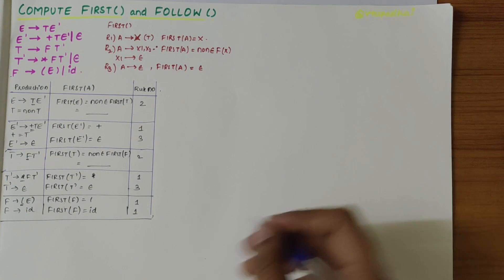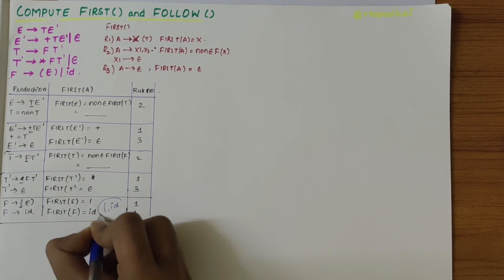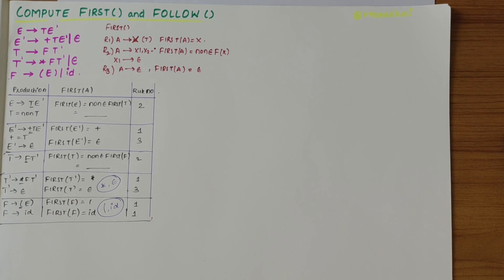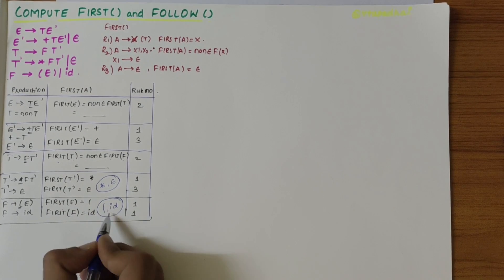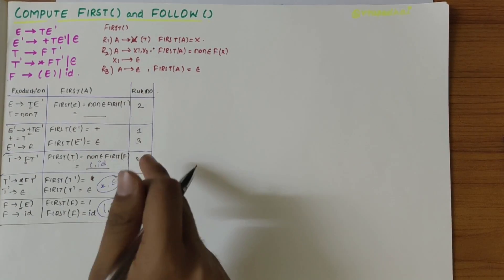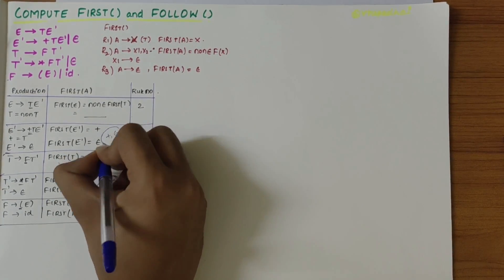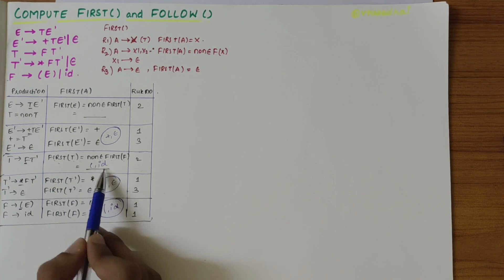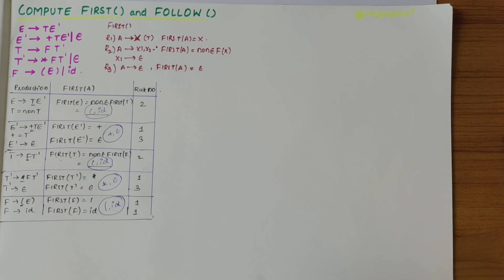Now let's fill in the unknown values. First of F is '(' and 'id'. First of T' is '*' and epsilon. First of T is non-epsilon first of F — looking at first of F, it is '(' and 'id' with no epsilon, so first of T is '(' and 'id'. First of E' is '+' and epsilon. First of E is non-epsilon first of T, which is '(' and 'id'.